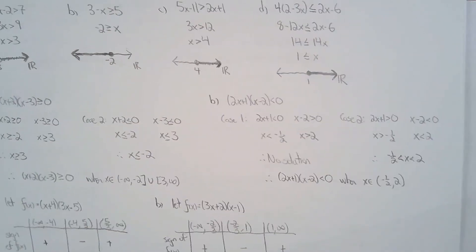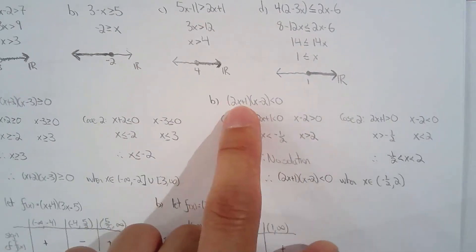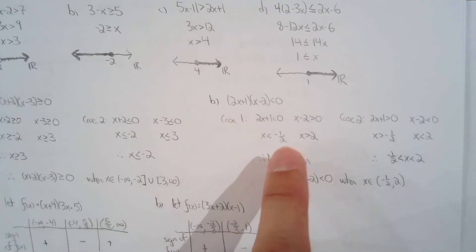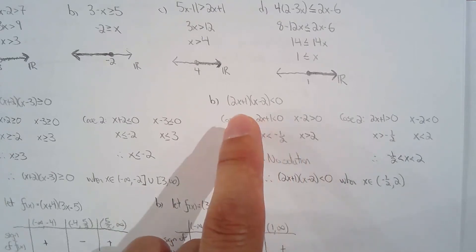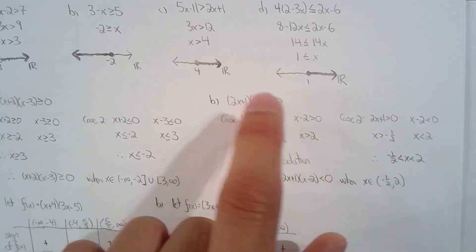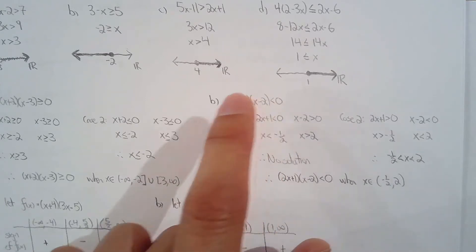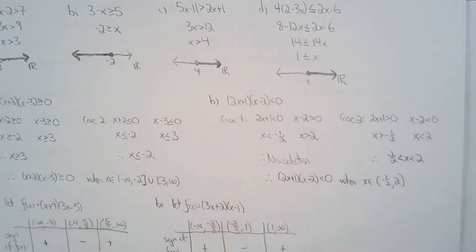Okay, so for example, when is it less than 0? When the first factor is positive and the second factor is negative, or when the first factor is negative and the second factor is positive. So those are your two cases.